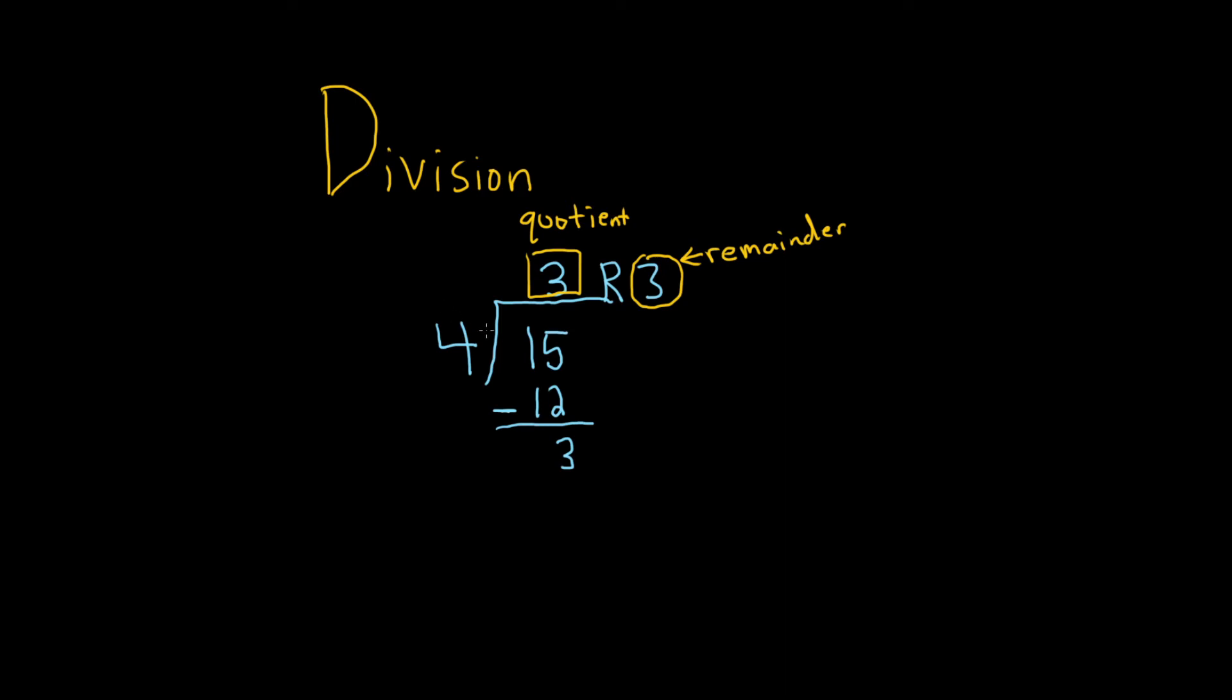And the 4 here, the one that's going into the 15, this is called the divisor. And the 15 also has a special name. This one's called the dividend, so this was a really basic example of division.